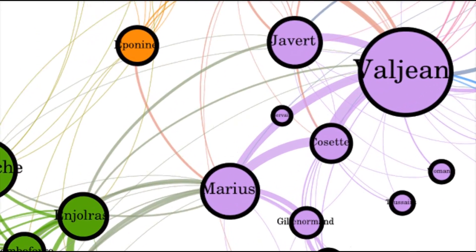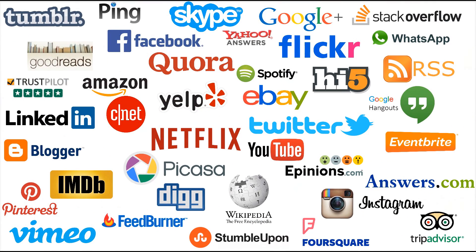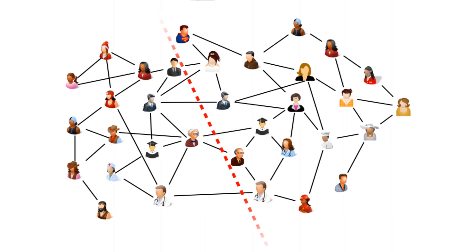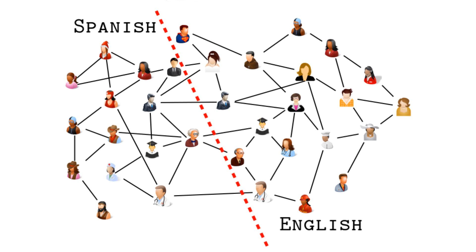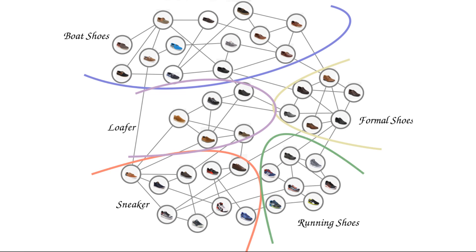We come across networks in our routine life in various forms, be it a network of social beings with whom we interact physically and virtually, or a network of products which we use in our day-to-day life. A frequent problem encountered in practice is to label the nodes in these networks. For a social network, the labeling can be based on user demographics like language, location, preferences, etc. Similarly, for a product network, it can specify either category or some other aspects of the product.